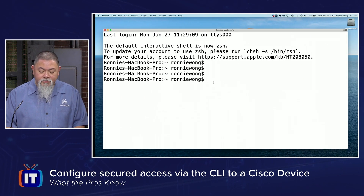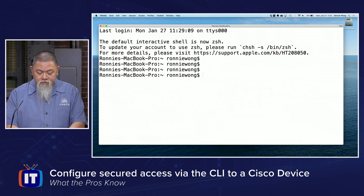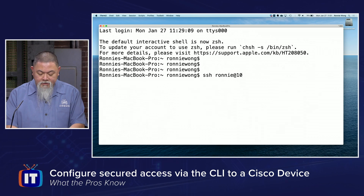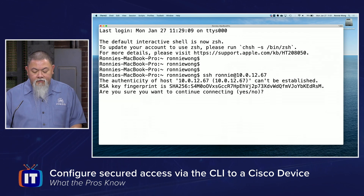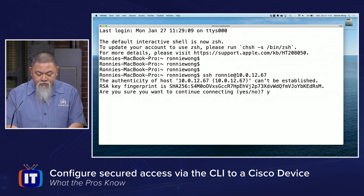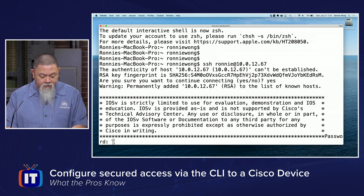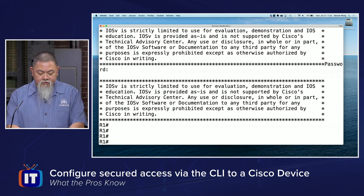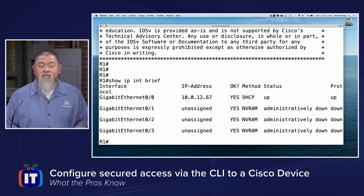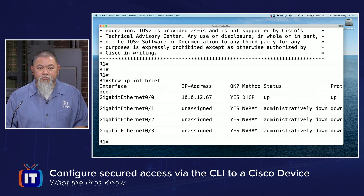I need to go to the other machine and make sure — so I'll do SSH Ronnie at 10.0.12.67, and press enter. It's asking if I'm sure I want to continue — I'll type yes — and now it's asking for my password, which was Cisco123, and there it is. I am now actually in. I do a show IP interface brief and you can see it's actually that same device, confirming secure remote access from my workstation to the router.